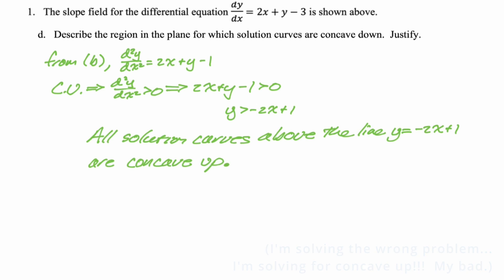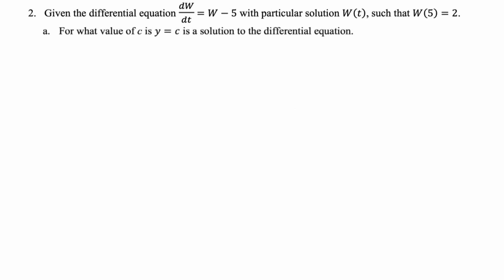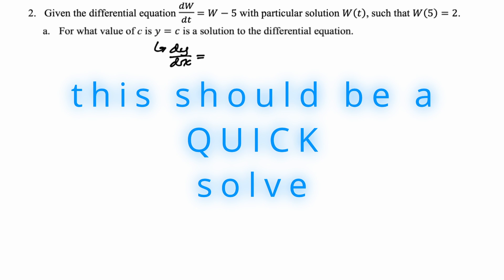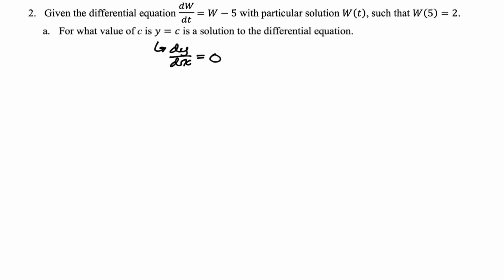Next: given dw/dt equals w minus 5 with w(5) equals 2, for what value of c is y equals c a solution? If y equals c is a solution, the derivative equals 0. So 0 equals w minus 5, meaning w equals 5, so c equals 5. You can verify this by plugging 5 in and getting 0.